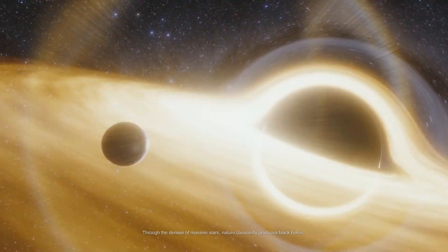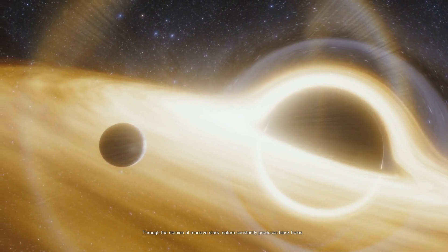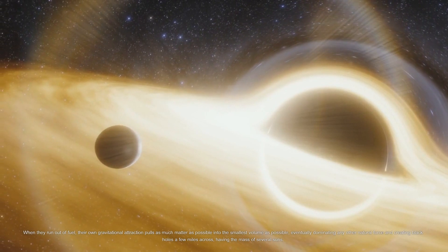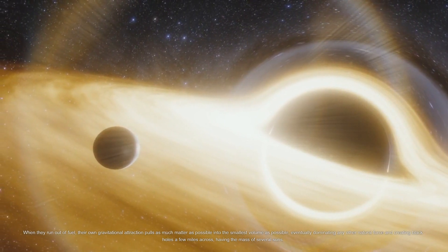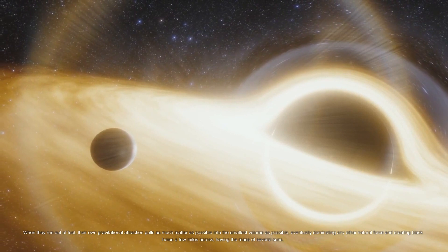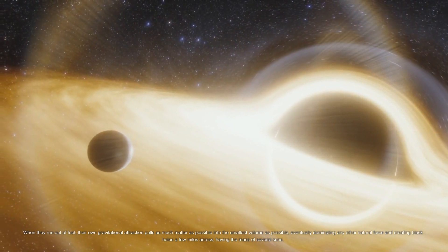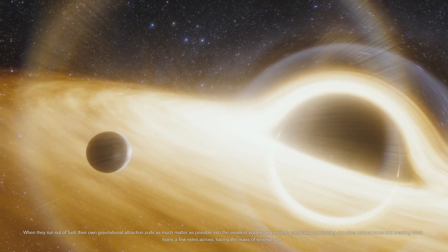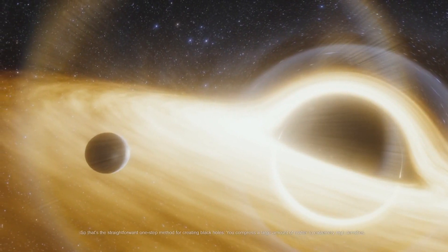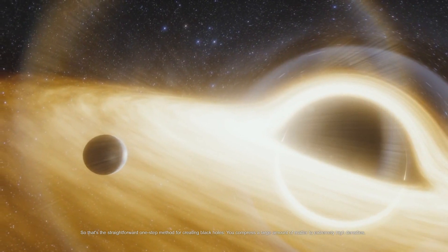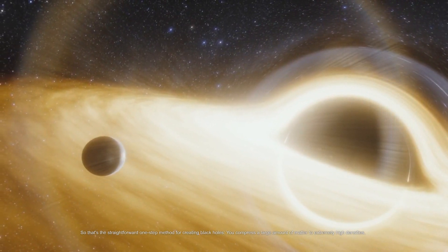Through the demise of massive stars, nature constantly produces black holes. When they run out of fuel, their own gravitational attraction pulls as much matter as possible into the smallest volume as possible, eventually dominating any other natural force and creating black holes a few miles across, having the mass of several suns. So that's the straightforward one-step method for creating black holes: you compress a large amount of matter to extremely high densities.